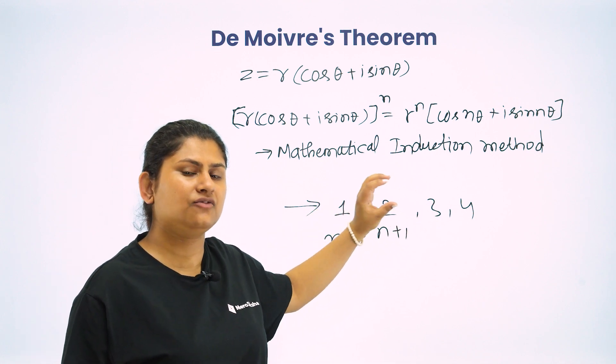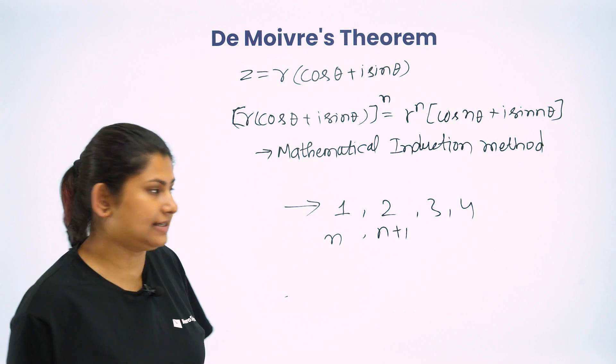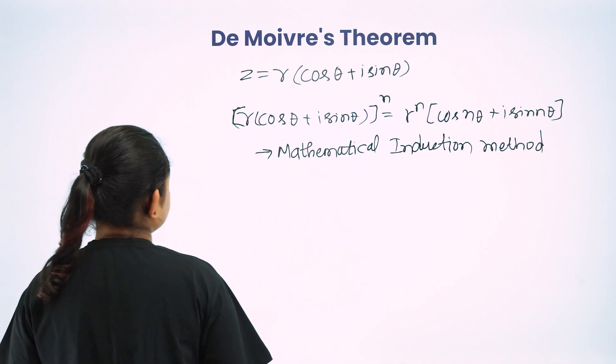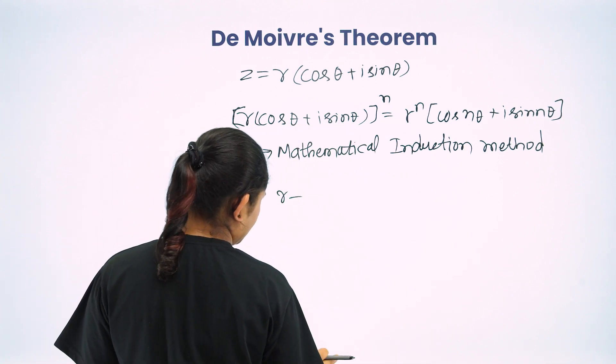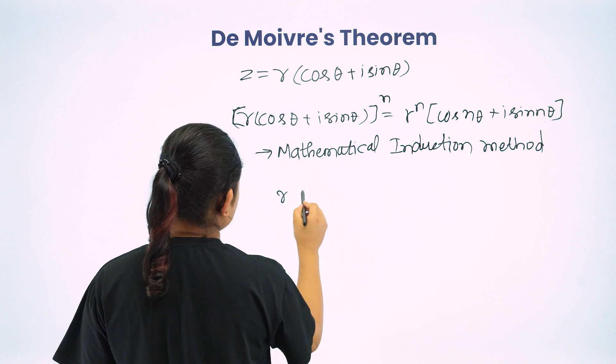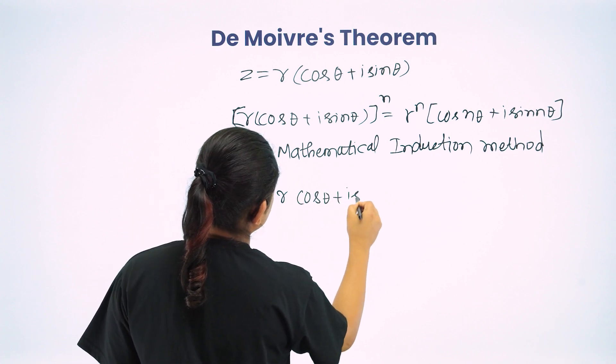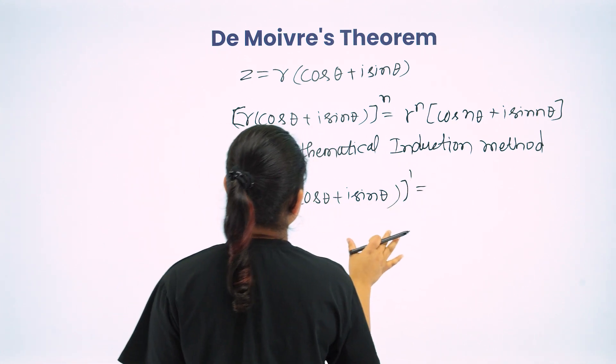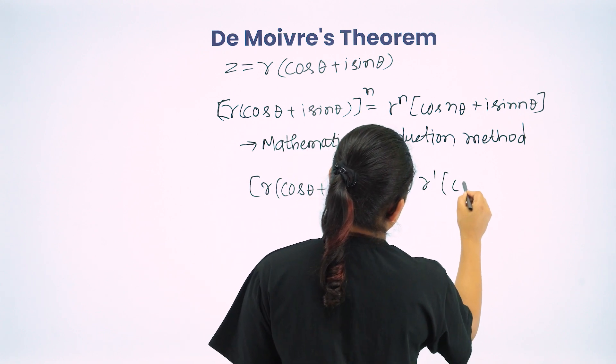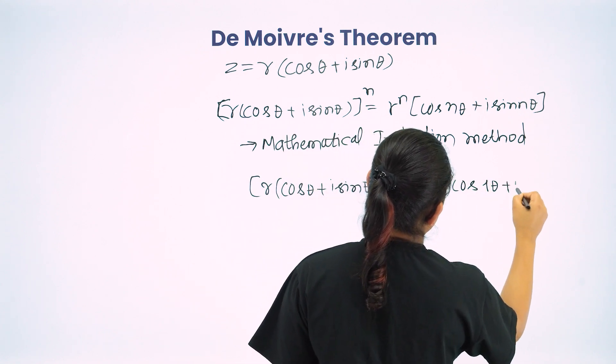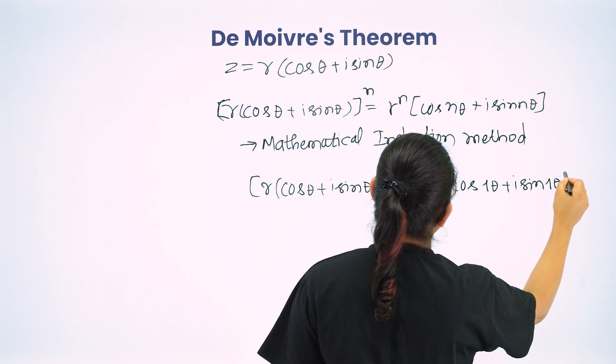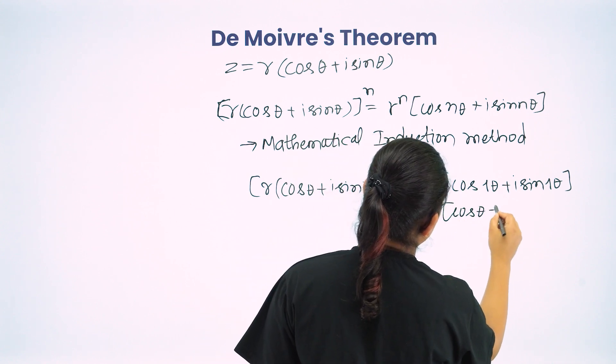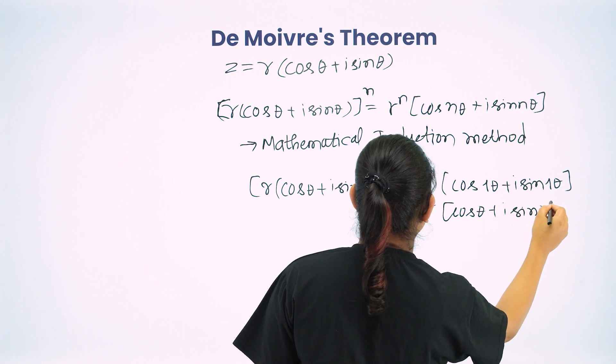Let's see for n equals 1. r cos theta plus i sin theta power 1 should equal r to the 1 cos 1 theta plus i sin 1 theta, which equals r cos theta plus i sin theta. It worked for 1.